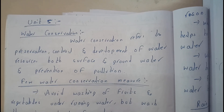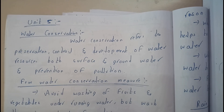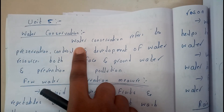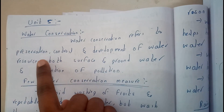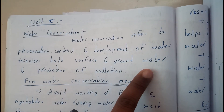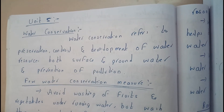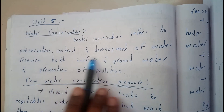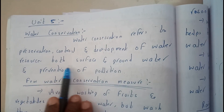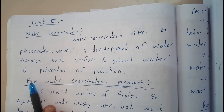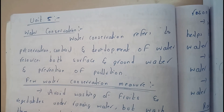Water conservation is nothing but saving of water. In formal terms we can write it like this: water conservation refers to prevention, control and development of water resources — both surface and groundwater — and preventing pollution, which leads to conservation of water.